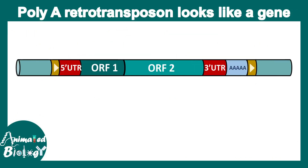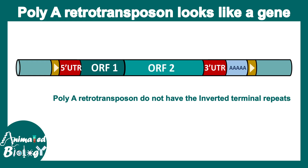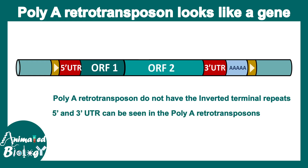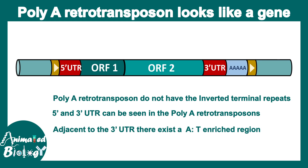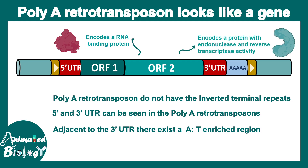Now let's look at the features of LINEs in a bit more detail. At first glance they look like protein-coding genes — they have 5' UTR and 3' UTR, and they don't have inverted terminal repeats. The 5' and 3' UTRs are adjacent to a poly-A site, which is characteristic of any protein-coding gene because mRNA has polyadenylation sites. The ORF2 codes for two important proteins: the first encodes an RNA-binding protein, and the second encodes a protein containing reverse transcriptase and endonuclease activity. Both ORF2 products are important for the transposition reaction.